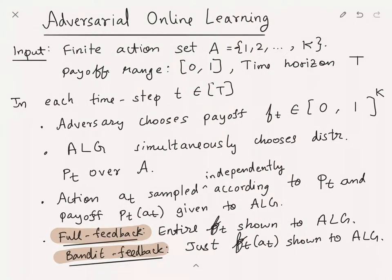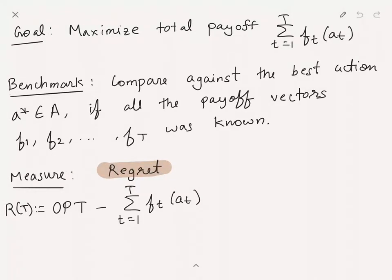We can also constrain the power of the adversary. In the adaptive adversary framework, the adversary can see the past actions A_1, ..., A_{t-1} before choosing payoff F_T, but cannot see the randomness used by the algorithm. The slightly weaker framework is the oblivious adversary, where the adversary must choose all payoff functions a priori. We'll go back and forth between these two types of adversary throughout the lecture series.